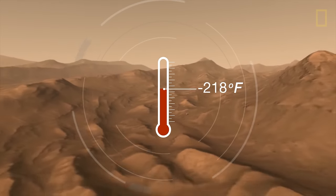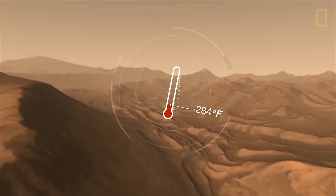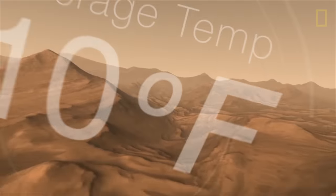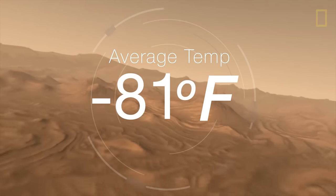Temperatures can reach as low as negative 284 degrees Fahrenheit, but due in part to the red planet's distance from the Sun, the average temperature on Mars is a chilly negative 81 degrees Fahrenheit.